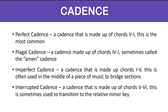The perfect cadence is made up of chords V to I, and is the most common cadence. A plagal cadence is made up of chords IV to I, sometimes called the Amen cadence. An imperfect cadence is made up of chords I to V, and is often used in the middle of a piece of music to bridge sections. The interrupted cadence is made up of chords V to VI, and is sometimes used to transition to the relative minor key. In the key of C major: V to I is G to C, IV to I is F to C, the imperfect cadence I to V is C to G, and the interrupted cadence V to VI is G to A minor.